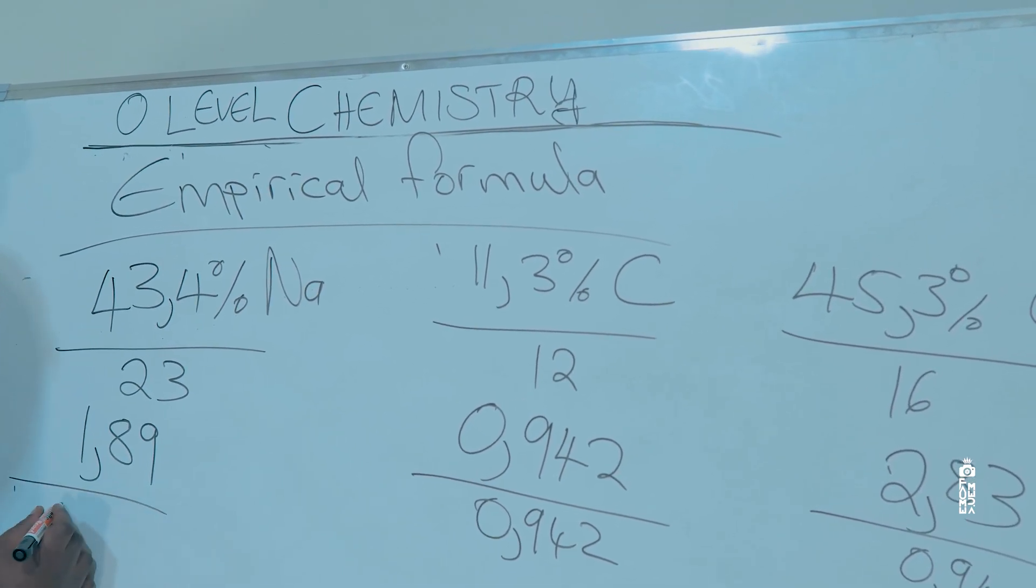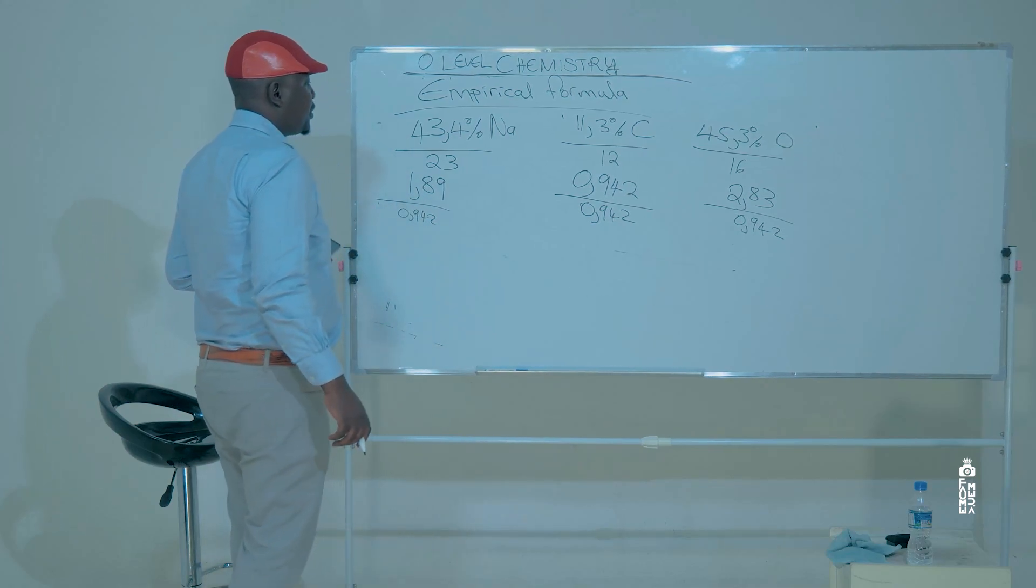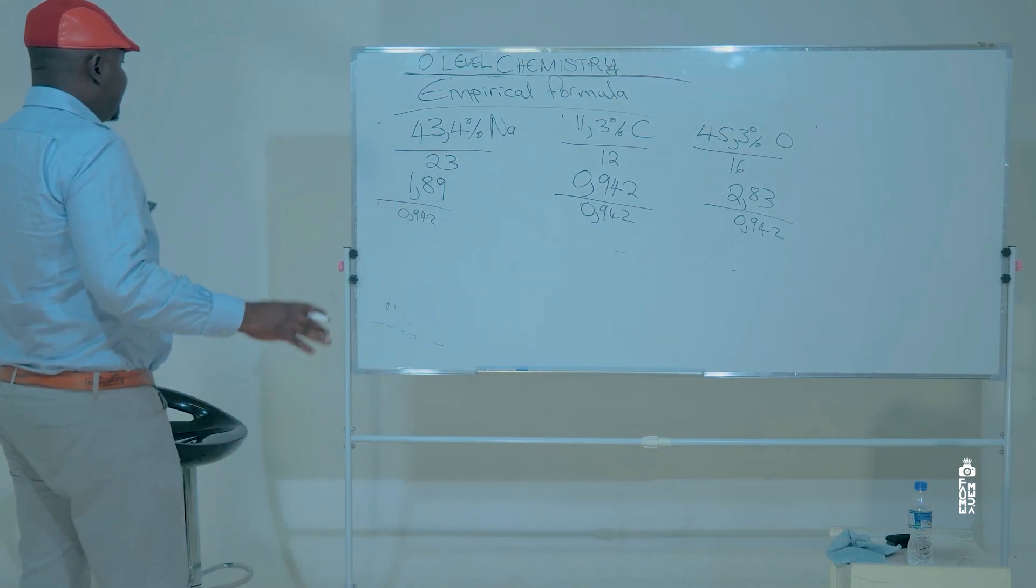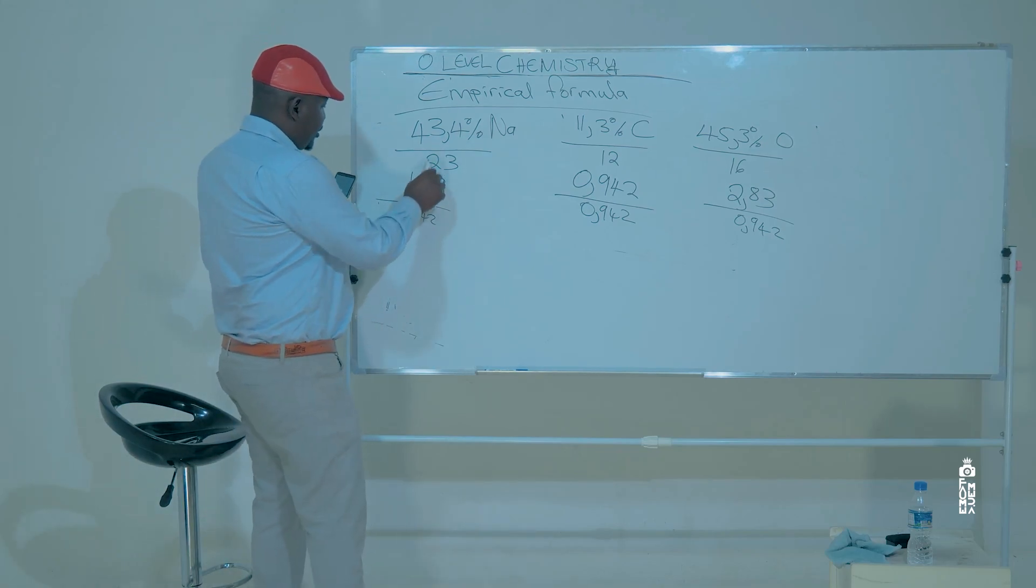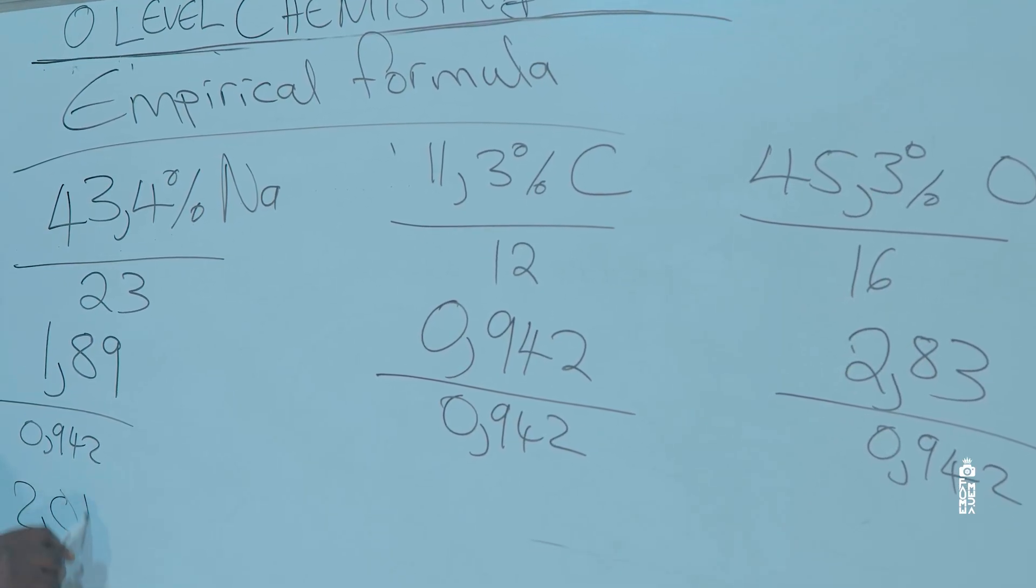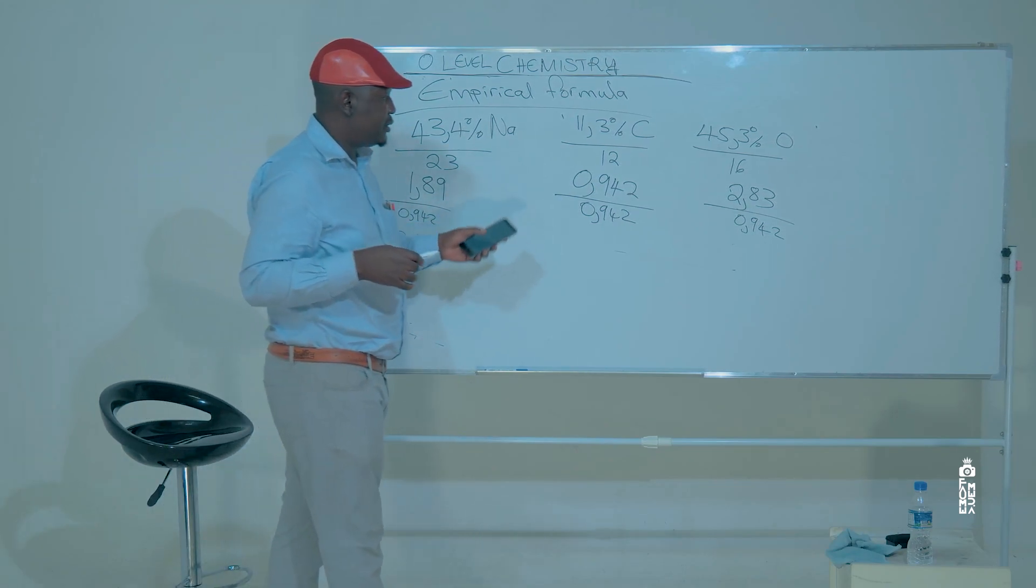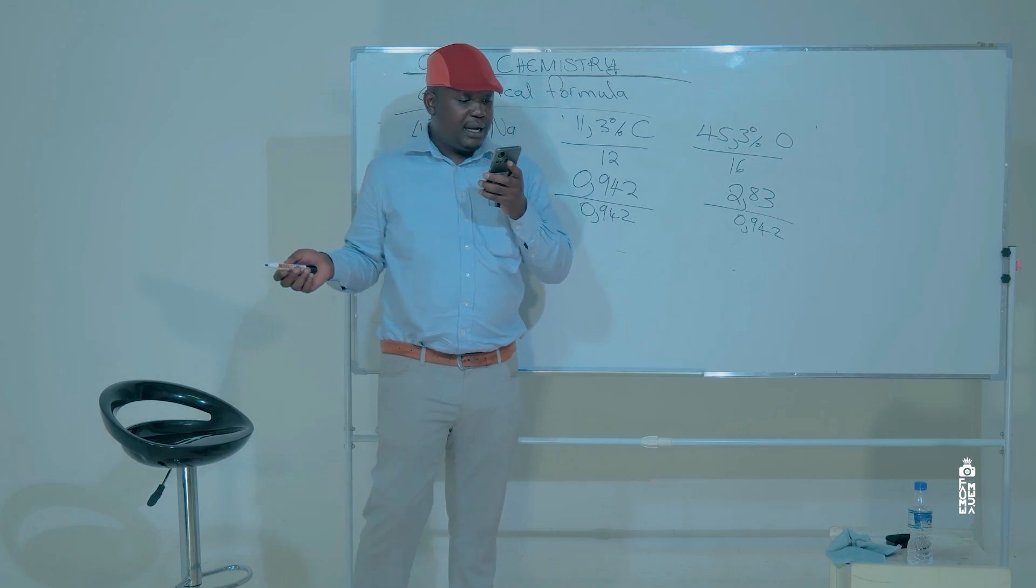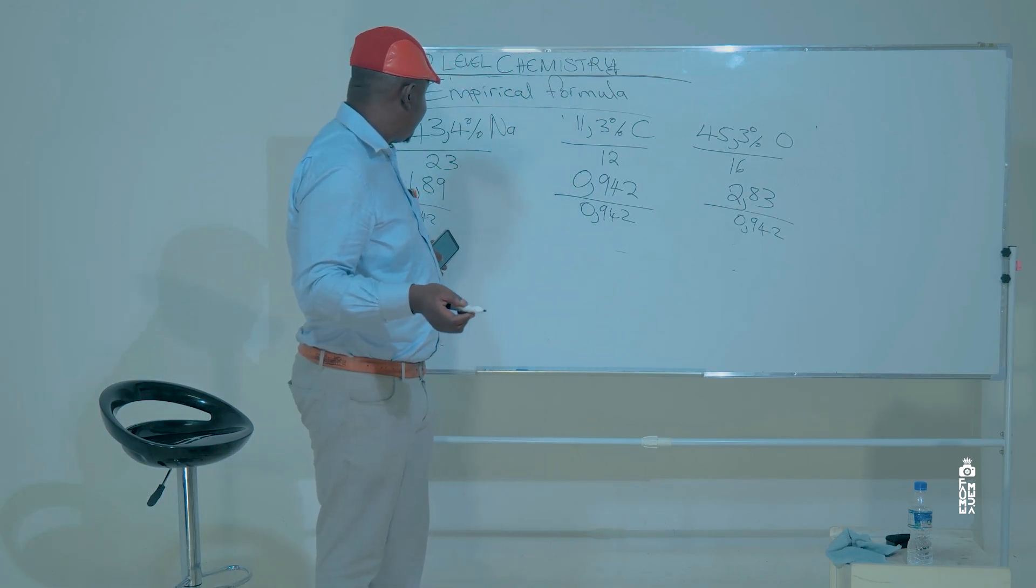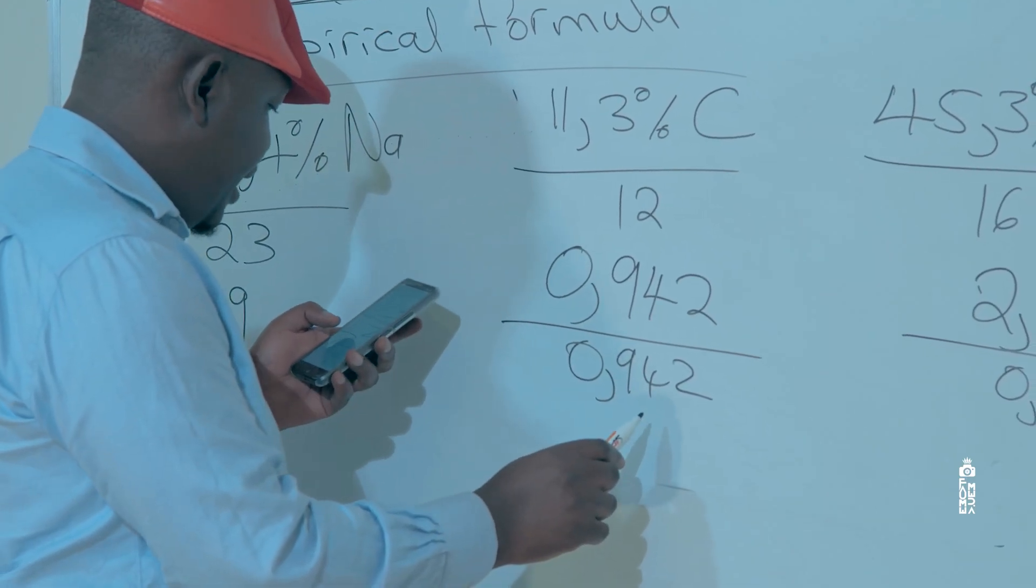So after division we are going to get 2.01. Remember, calculators are allowed in chemistry or combined science, so don't worry about cracking yourself trying to calculate this without a calculator. We are going to get 2.01 here, we are going to get 1 here, and we are going to get 3 here.